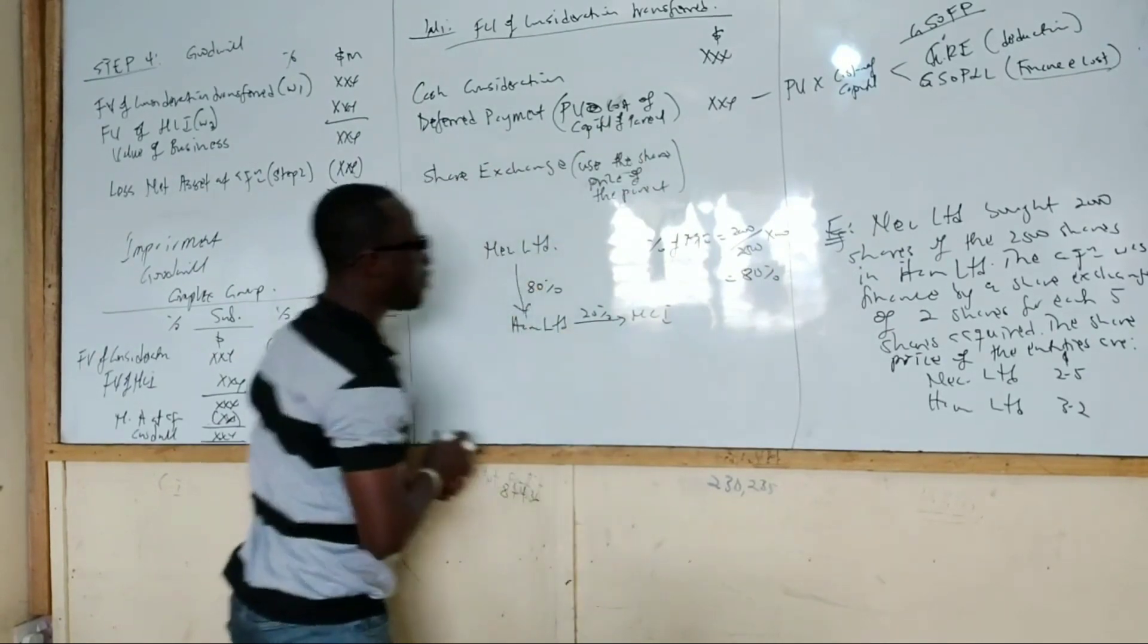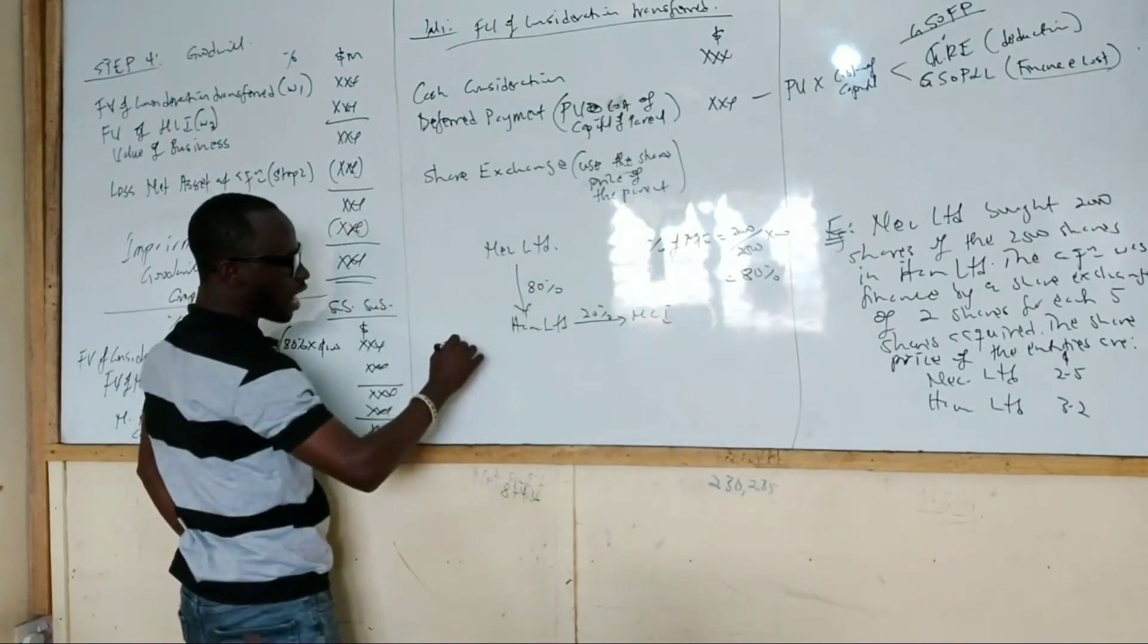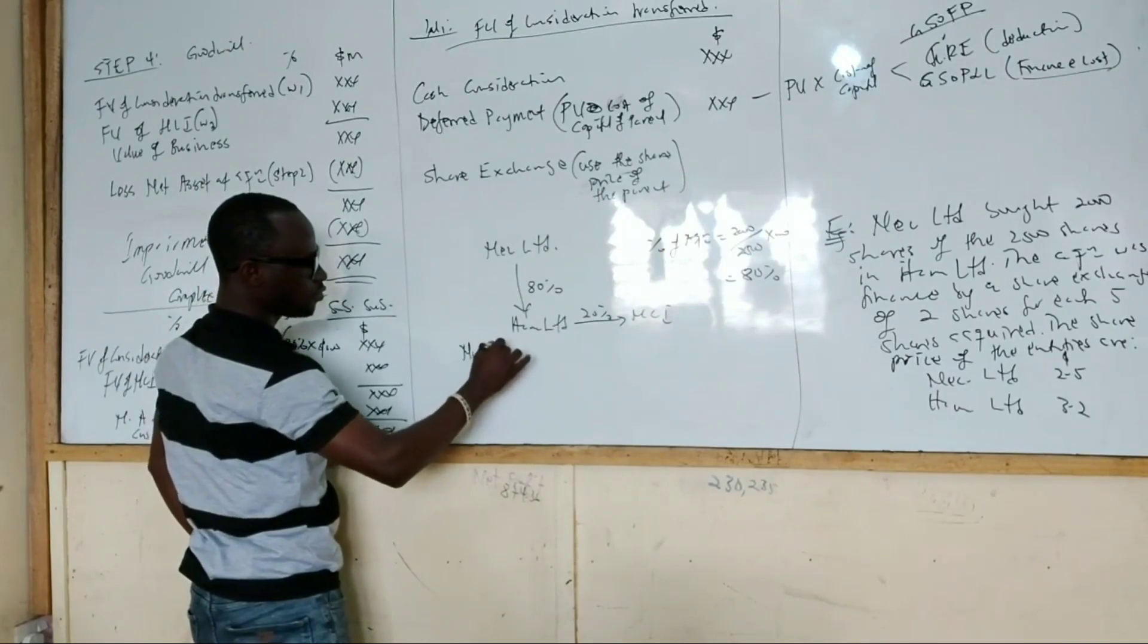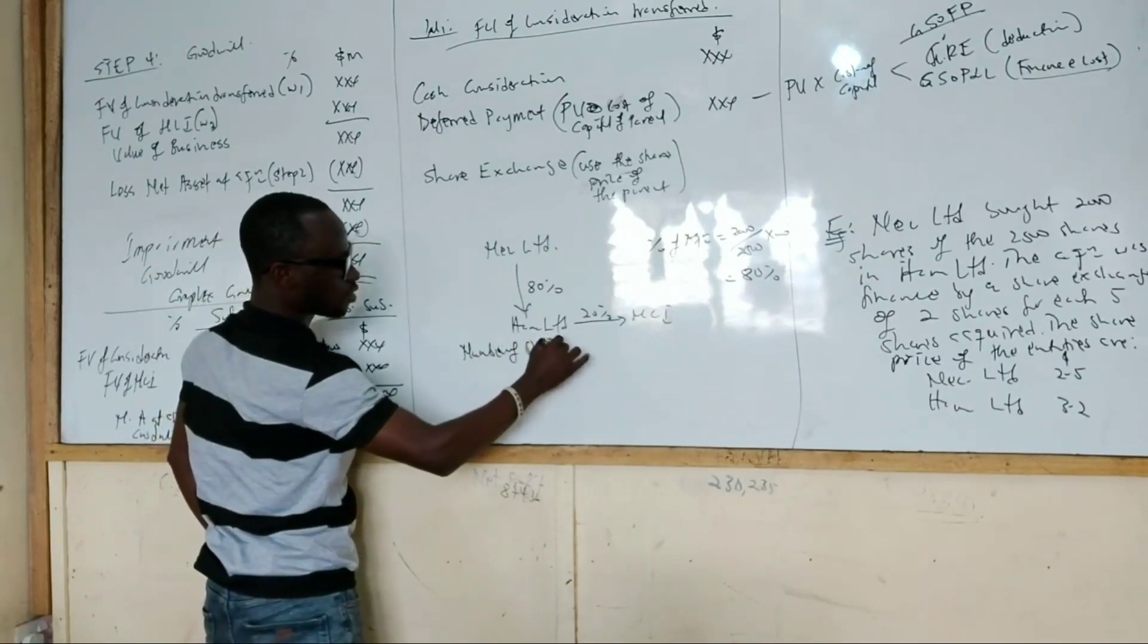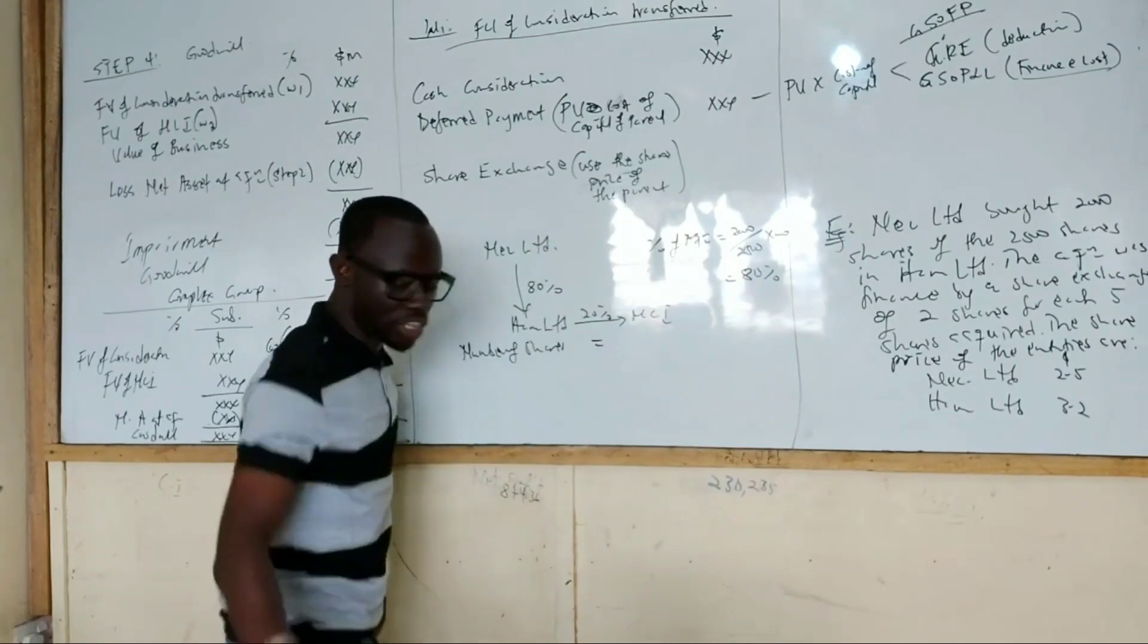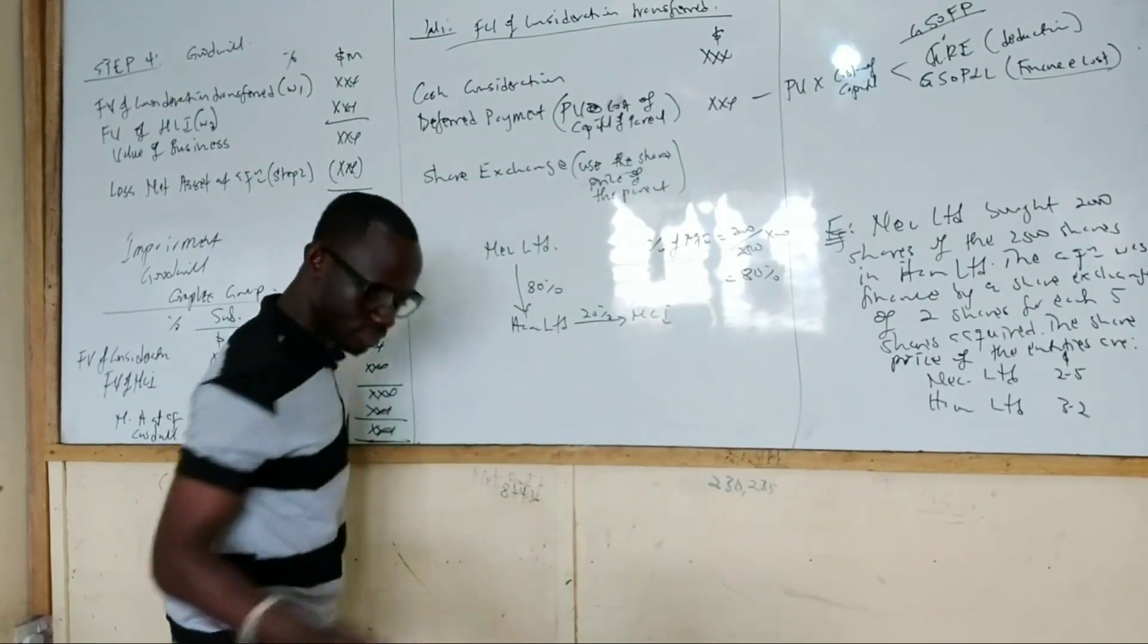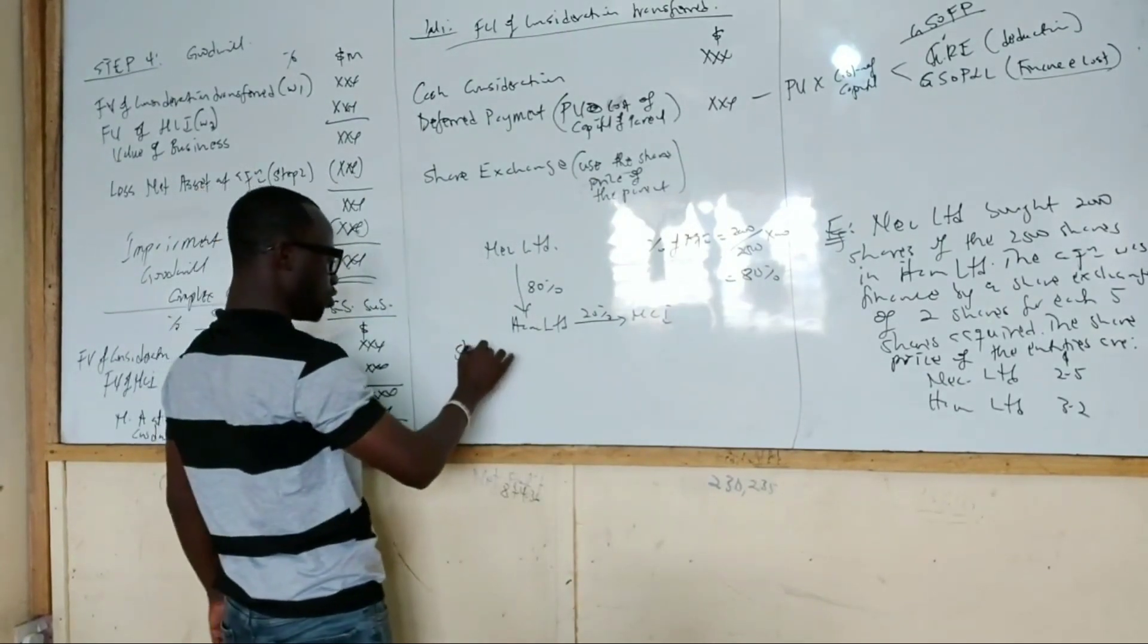So what do we have there? Number of shares acquired, 2,000 shares acquired. So 2,000. So if they are doing share exchange, what will it be? So let me even go straight to that.